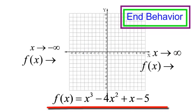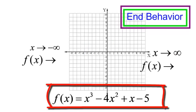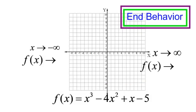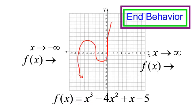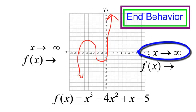If I had this problem — F of X equals X cubed minus 4X squared plus X minus 5 — tell me about the end behavior. Well, this is an X cubed, so I know it's going to have two curves and it's positive, so it's going to start low and end high. As my X's are approaching positive infinity, it looks like my F of X is also approaching positive infinity.